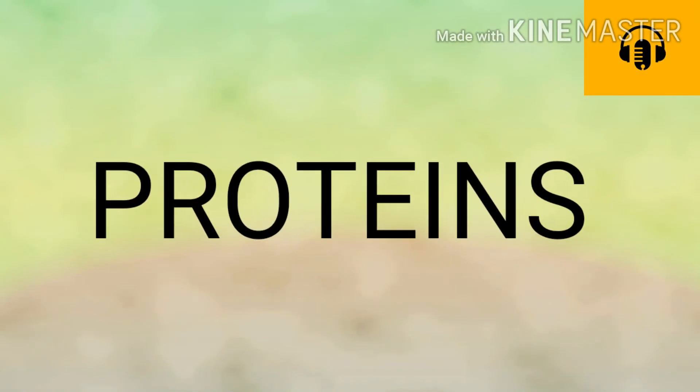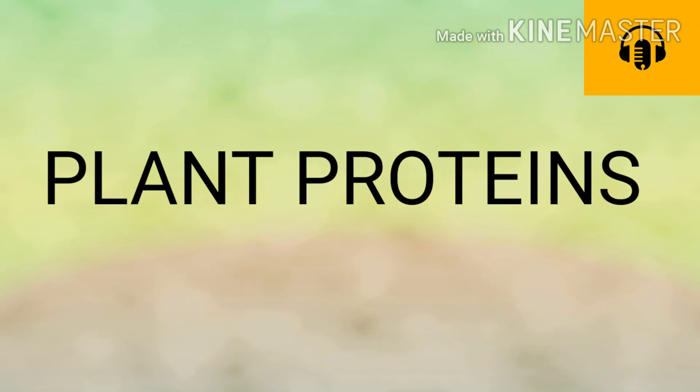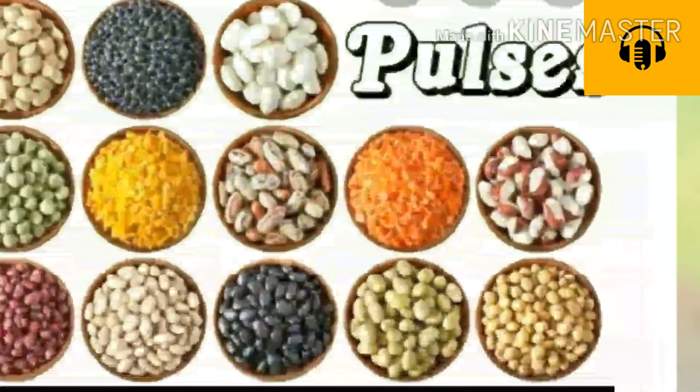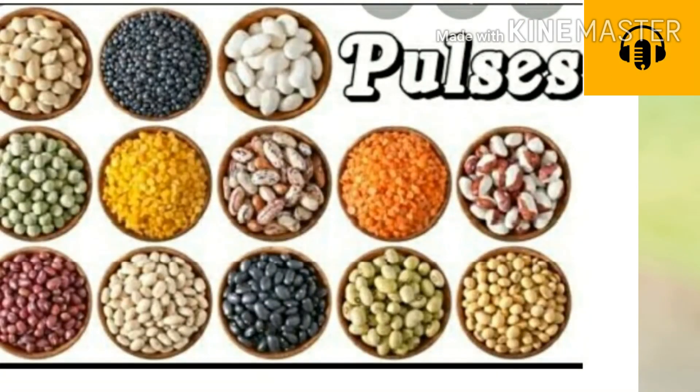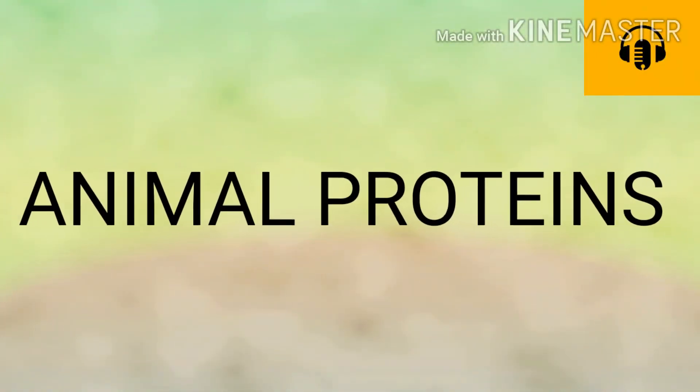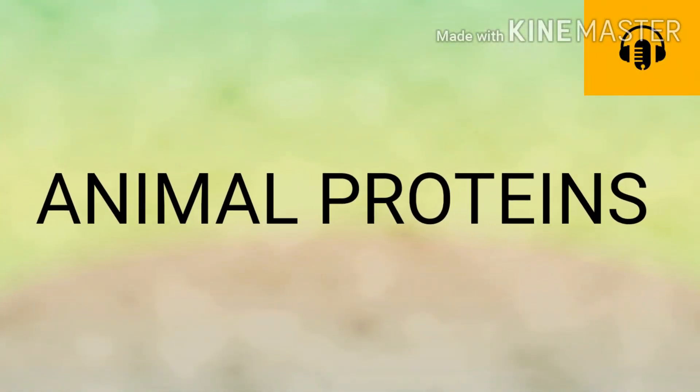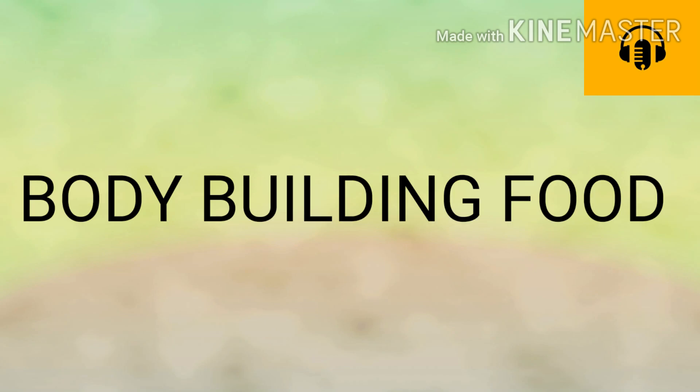Now let us study about proteins. Proteins are obtained from two sources. The first source is plants — an example of plant proteins are different kinds of pulses. The second source is animals — examples of animal proteins are egg, fish, and meat. Proteins help in digestion, body growth, and tissue repair, so proteins are also known as body-building food.